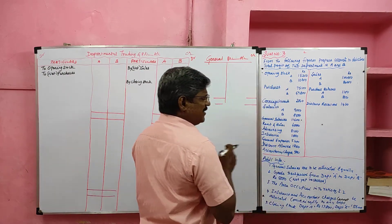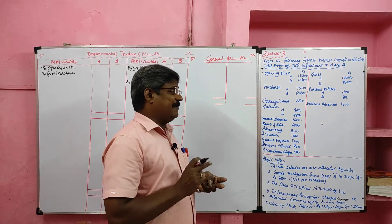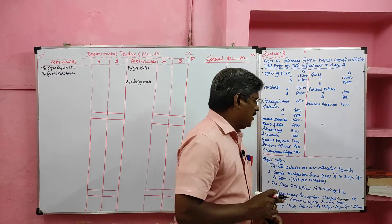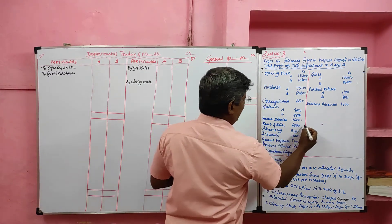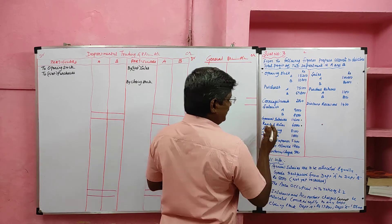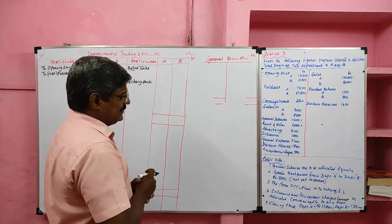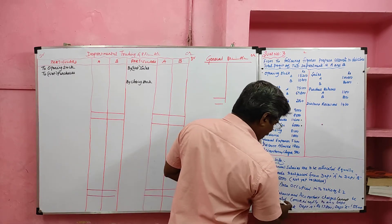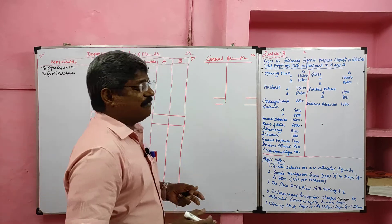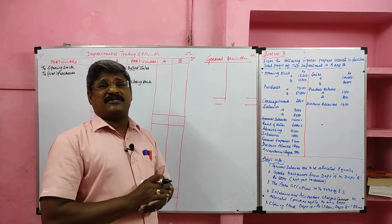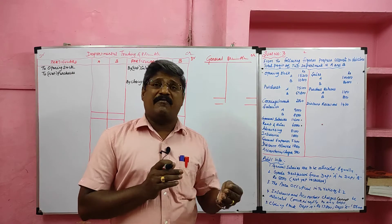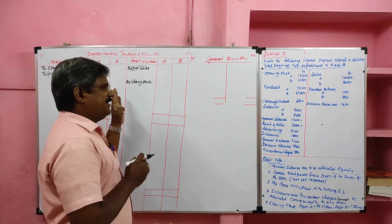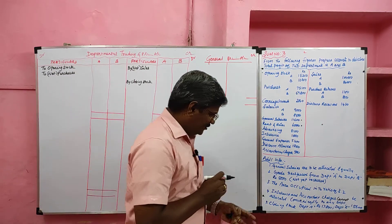The area occupied is in the ratio of 3 is to 2. Why this ratio is given? In case of rent, lighting, and depreciation of building, it should be divided in the ratio of area occupation. So we have rent, and the rent should be divided in the ratio of 3 is to 2. Then insurance and accountancy charges cannot be allocated conveniently to any department — the expenses which cannot be divided should be debited to the general profit and loss account.